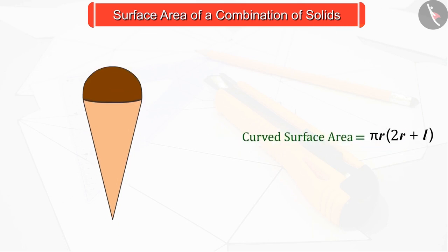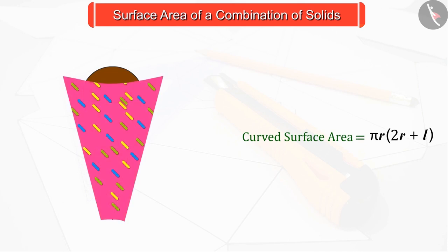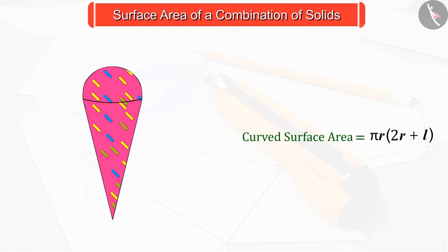You can see that the paper used to pack the ice cream cone will be equal to the total curved surface area of the cone.